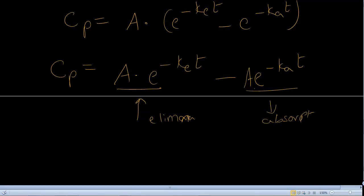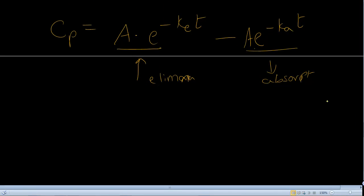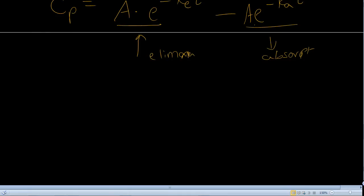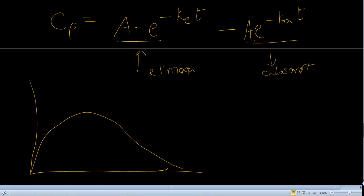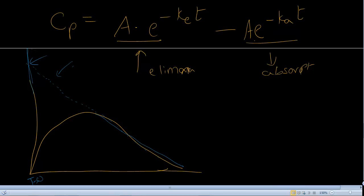The rate of absorption and elimination are both continuous processes until the drug is completely absorbed and eliminated from the body. If I draw a one-compartment oral administration graph, and I extrapolate the terminal phase of this equation back to time zero — this is the method of residuals — I simply extrapolate the concentration back, and this intercept reveals information about A.